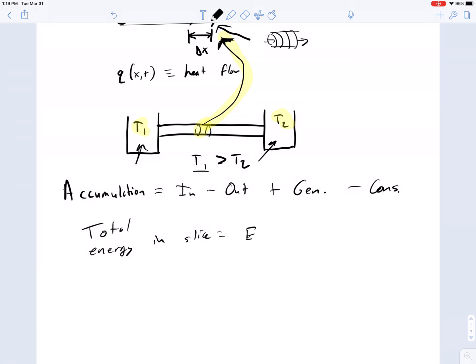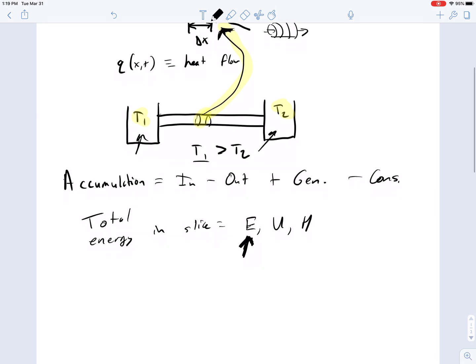We can use E or U or H to denote energy. Let's just stick with E so that it can be equivalent of either of these things. And we can interchange them, especially if it's a liquid or solid, then the heat capacities are roughly equivalent.